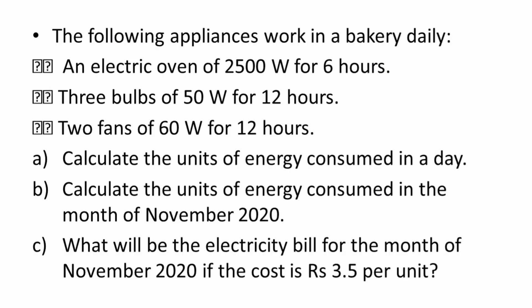The question is: the following appliances work in a bakery daily — an electric oven of power 2500 watts for 6 hours, 3 bulbs of 50 watt power for 12 hours, and 2 fans of 60 watt power for 12 hours. There are 3 questions: first, calculate the units of energy consumed in a day; then calculate the units of energy consumed in the month of November; and what will be the electricity bill for the month of November 2020 if the cost is Rs 3.5 per unit.